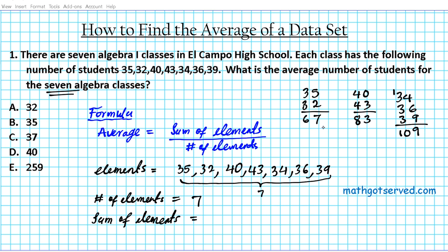All right, so now we're just going to add these three sums together. So we have 109 plus 67 plus 83. So 3 plus 7 is 10, plus 9 is 19, 9 carry 1. And then we have 7 plus 8, 7 plus 8 is 15, 5 carry 1, 259. So the sum of elements is 259.